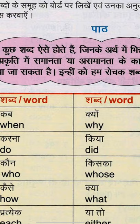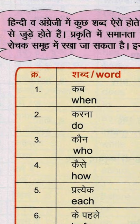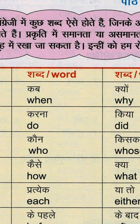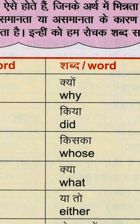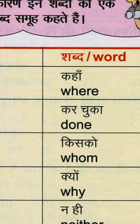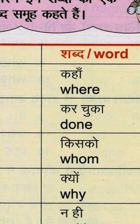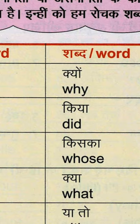पहला वर्ड लेते हैं 'when', जिसको इंग्लिश में कहते हैं — यह timing के लिए होता है, time पूछने के लिए, जैसे 'when do you get up?' आपका 'what' पूछते हैं। फिर हैं 'why' — W-H-Y — यह सब WH words हैं।